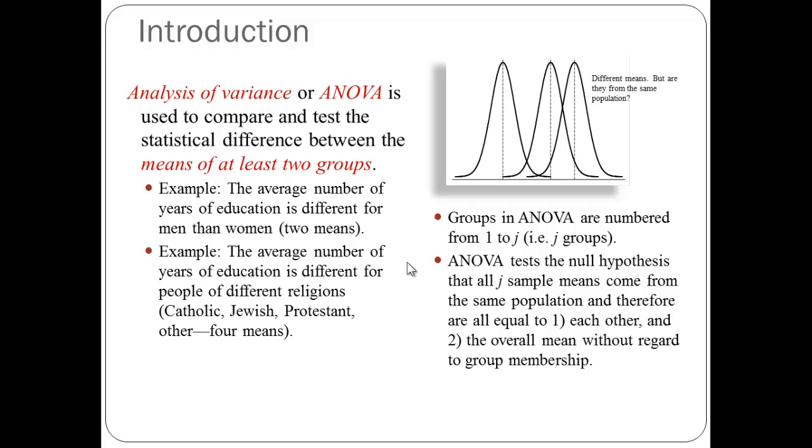These different groups are numbered in ANOVA, typically from 1 to J. So Catholic could be group J1, Jewish could be group J2, and so forth. Our ANOVA test tests the null hypothesis that those means, in this case these four means, come from the exact same population, and therefore they're all the same, versus they're drawn from different populations, and therefore they're different from each other.